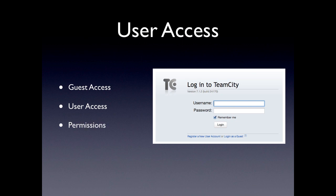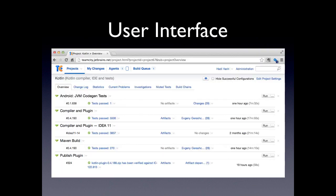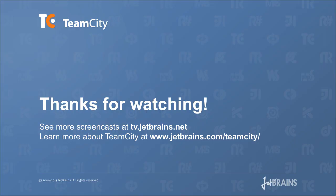The main screen basically lists a series of configured projects, and we can access our changes, a list of all projects, agents, build queues, and more — all from here.